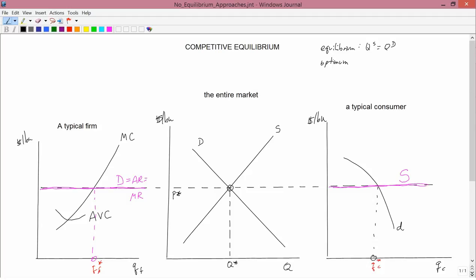Then the selfish actions of the firm, just taking P star as given and maximizing profit, and the selfish utility maximizing actions of the consumer, just taking the price of corn as being given and maximizing utility, together generate a supply of corn on the one hand and a demand for corn on the other hand that's exactly equal to each other.